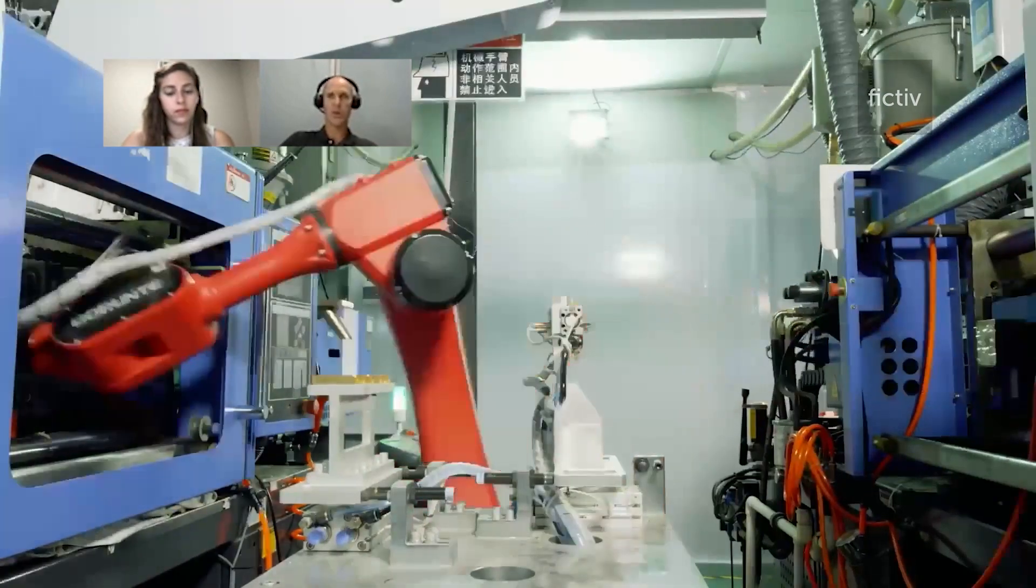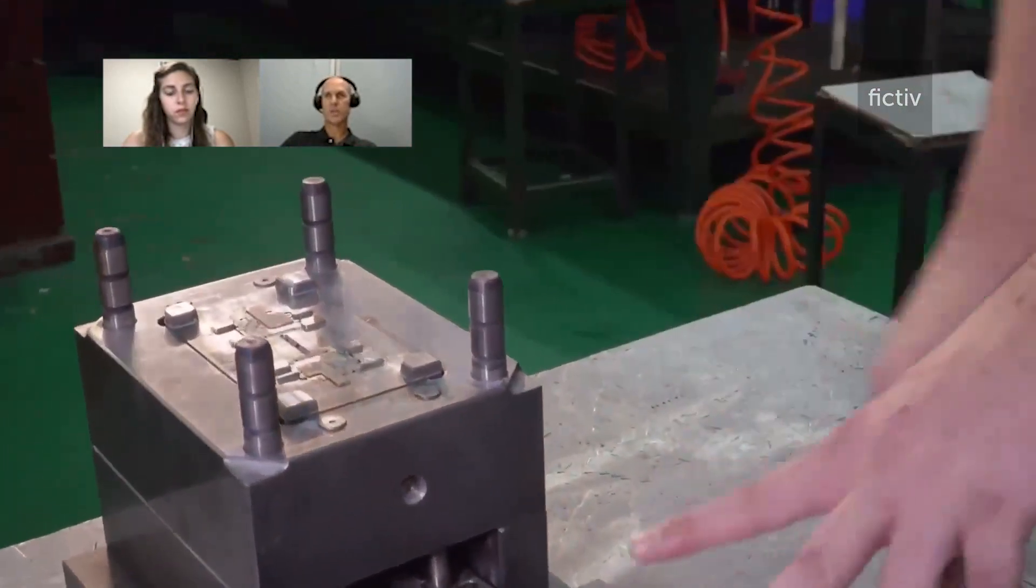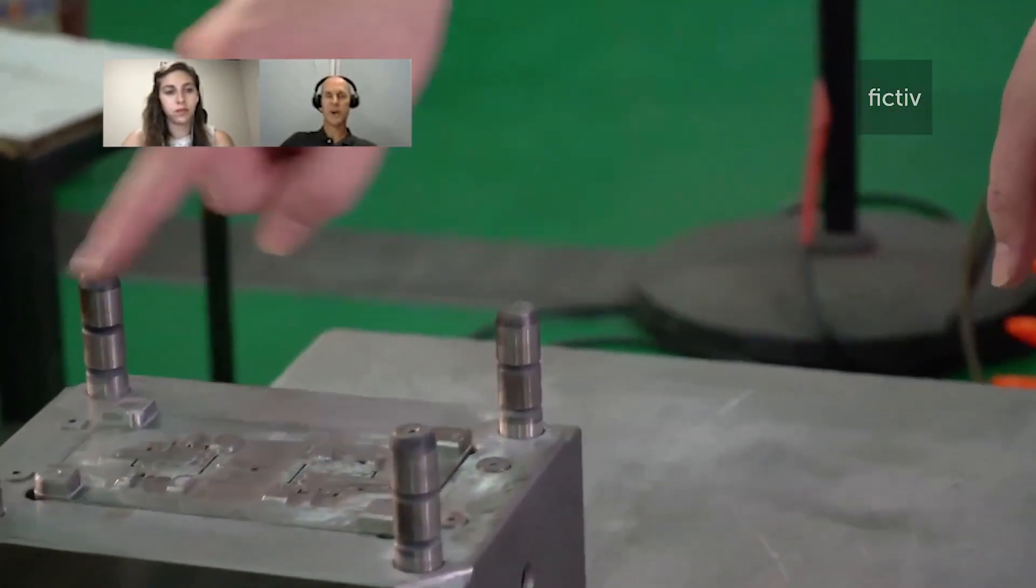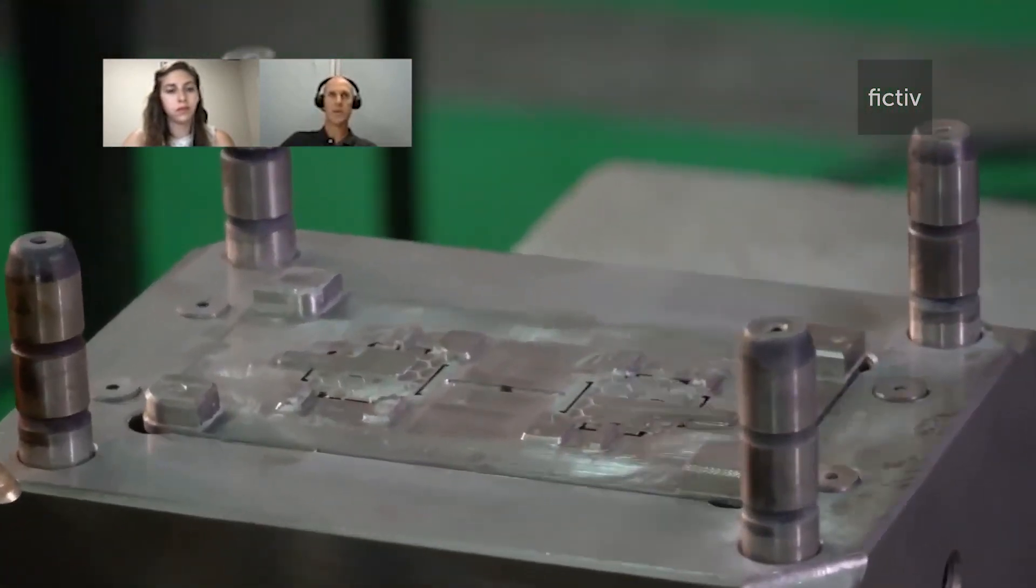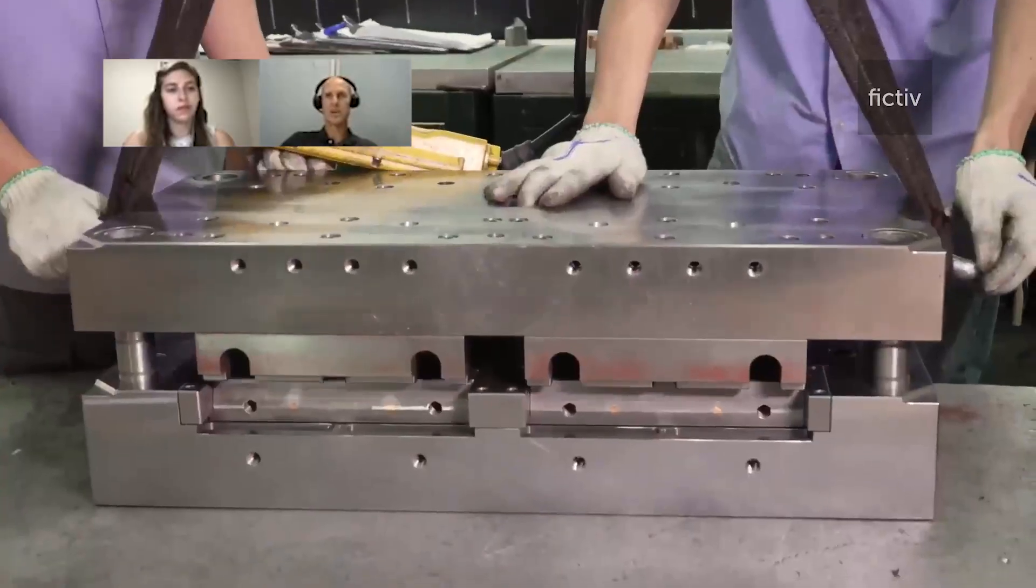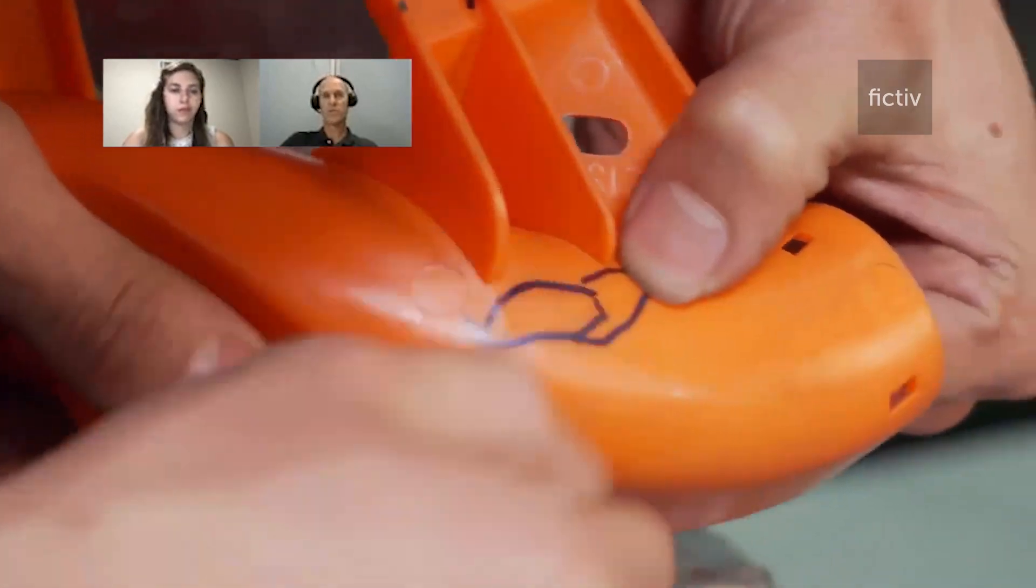Usually, when you get above that 100 to maybe 200 range, that's typically where I've seen the cost savings of injection molding help. The consistency—you're going to get a lot better consistency on 200 parts than you would with 200 3D printed parts or 200 urethane parts.